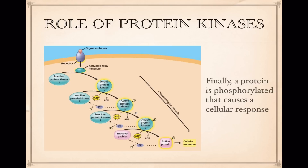These protein kinases, as soon as they're activated and pass the signal on to the next protein kinase, are quickly deactivated by enzymes in the cytoplasm that dephosphorylate them. This is a very fast-moving process because the distances being traveled are very, very small.